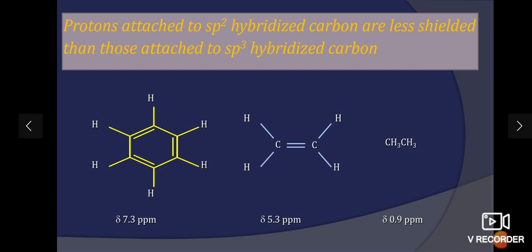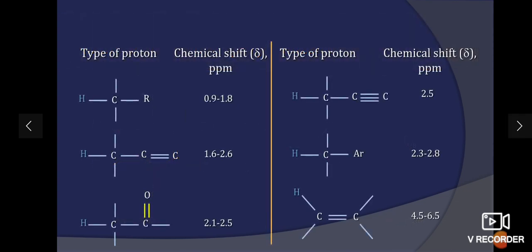The protons attached to SP2 hybridized carbon are less shielded than those attached to SP3 hybridized carbon. For example, benzene and ethylene and ethane. For benzene, it is 7.3. For ethylene, it is 5.3. And for ethane, it is 0.9. These are the examples of how the double bonds and the electronegative groups affect the chemical shift value.